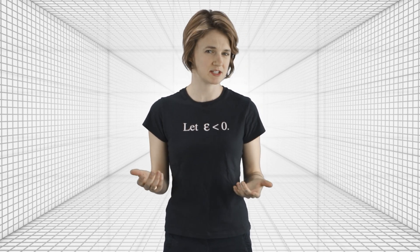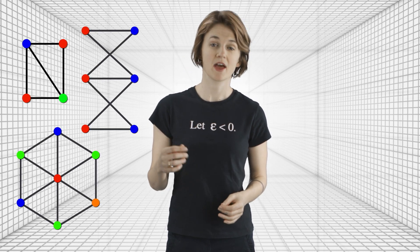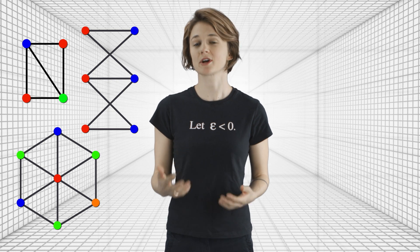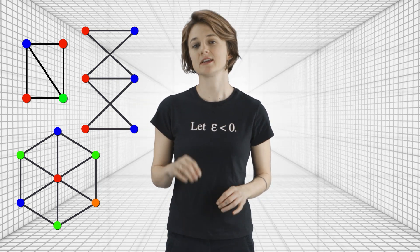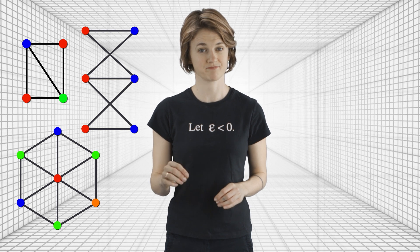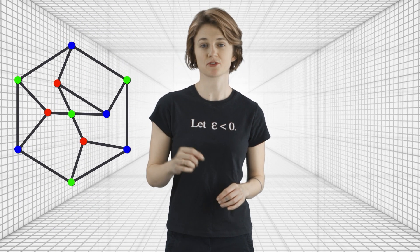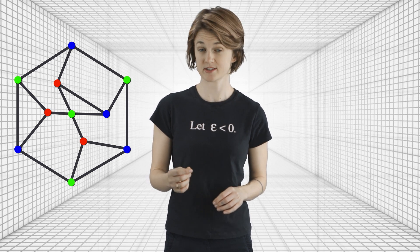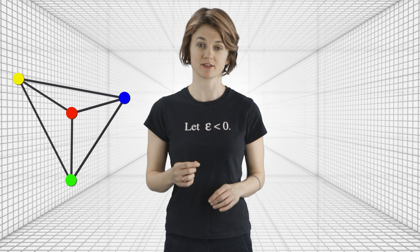Let's say you have a graph, which is just a bunch of vertices connected by edges. A coloring of the graph is a way to color all of the vertices so that no two vertices which are connected by an edge are the same color. A k-coloring, where k is some number, is a coloring of the graph that only uses k different colors. For example, this is a three coloring — three colors on the vertices and adjacent vertices have different colors. This is a four coloring.